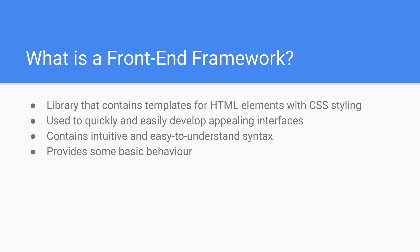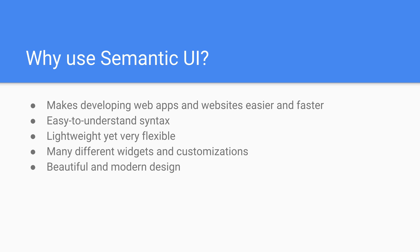We use these front-end frameworks to very quickly and easily develop appealing interfaces. They generally contain intuitive and easy to understand syntax, especially Semantic UI, and sometimes they even provide some basic behavior as well. So why use Semantic UI in particular? Semantic UI makes developing web apps and websites easier and faster than if you were to do it from scratch — it can cut down the time by half if not more. There's easy to understand syntax and it's lightweight yet very flexible, meaning there are lots of different widgets and customizations to choose from. You end up with beautiful and modern-looking web pages. We'll see that we can build up a really good looking web page in probably less than an hour, maybe like 40 minutes or so.